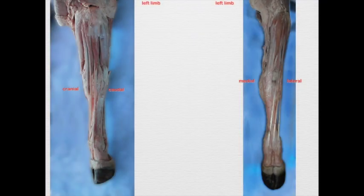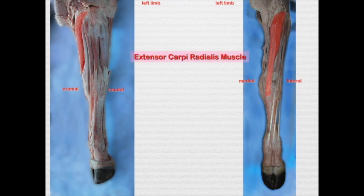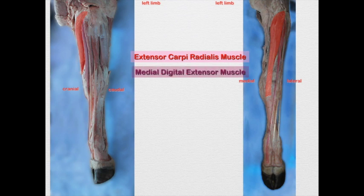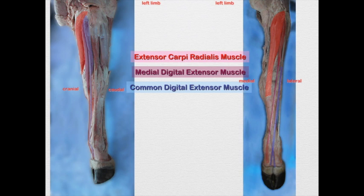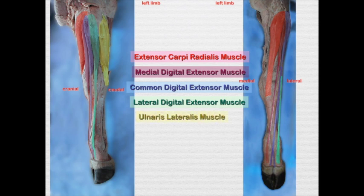Now let's have a look at the bovine — make sure you trace out these tendons of insertion, as that's going to be important in your identification. You have the extensor carpi radialis muscle, a medial digital extensor muscle — something we haven't seen before; as you trace it out, you will see that it goes to the medial digit. The common digital extensor tendon courses down and just prior to the digits divides into two branches, one to each digit. The lateral digital extensor muscle tendon goes out to the lateral digit. We're also going to see the ulnaris lateralis muscle. All of these are innervated by the radial nerve.